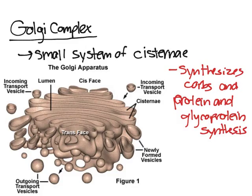What it does is it receives proteins from the rough ER. Remember how the rough ER has ribosomes on it that make proteins? Before those proteins are used, they have to be modified and changed up a little bit by the Golgi complex. So the Golgi complex receives the new proteins from the rough ER and then sorts them.